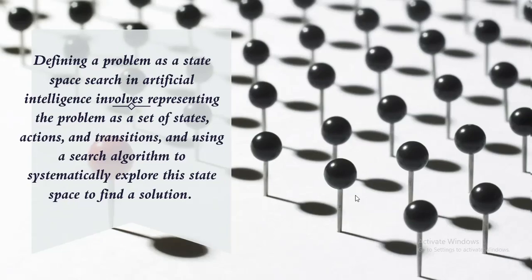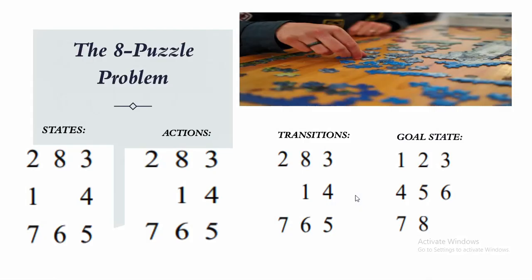Let us take an example — the 8 puzzle problem. First is states. Each state in the state space represents a specific configuration of the 8 puzzle. The 8 puzzle in AI is a classic problem where the goal is to rearrange a grid of tiles numbered 1 to 8, with one blank tile, to achieve a specific target configuration.